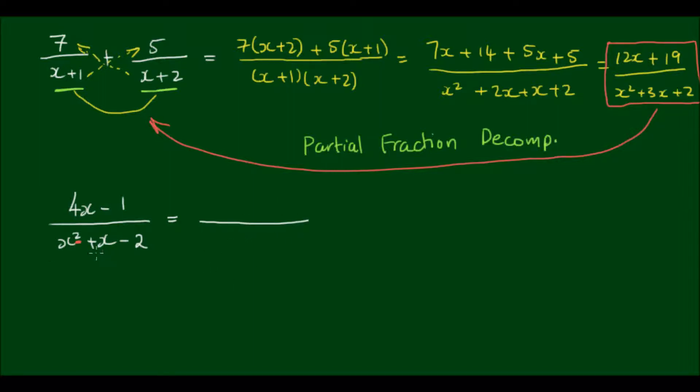So x squared plus x minus 2. I can actually rewrite it as x squared minus x plus 2x minus 2, and the numerator stays the same.